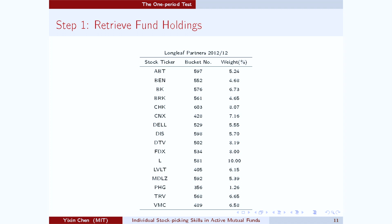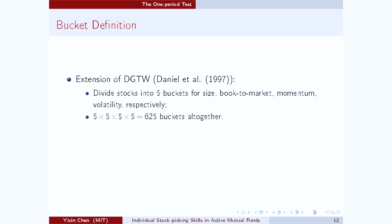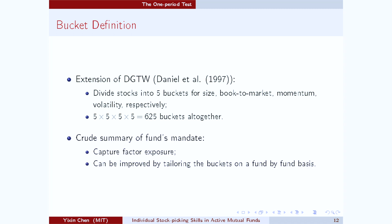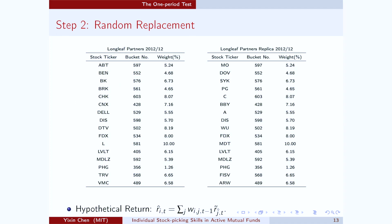The first column contains the names of the stocks that the investor keeps in the portfolio, whereas the last column contains the portfolio weights. The column in the middle contains the identity of the buckets that the stocks belong to. Here I'm dividing the universe of stocks into 625 buckets according to the characteristics of the stocks. Therefore, the construction of the buckets captures the investor's exposure to systematic factors. Now step number two is the critical step. In this step, I'm going to create a replica of the portfolio. On the left-hand side, we have the original portfolio, whereas on the right-hand side, we have the replica.